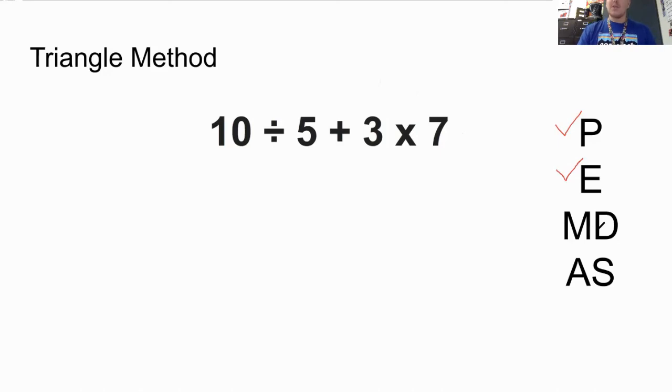Now, multiplication and division. Notice M and D are right next to each other. So we do first come first serve from left to right. So just because the M comes before the D, that doesn't mean I'm going to do 3 × 7 first. I'm going to do 10 ÷ 5 first. I want to make sure I get that done first. So 10 ÷ 5 would get me 2. Before I do any more math, I'm going to rewrite the rest of my expression. That addition sign got a little wonky on me.